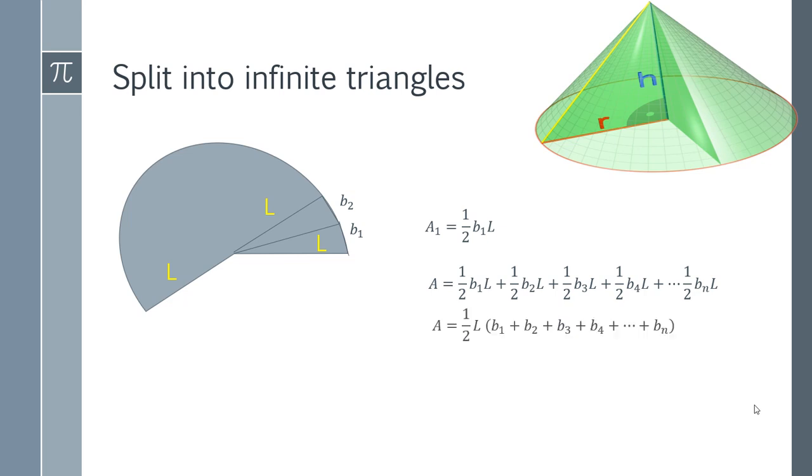We can then do some simple factorizing. So you can see that you've got half L appearing in every single one. So you've got a half L times the sum of all of those segments, B₁, B₂, all the way to Bₙ. And when we think about it,